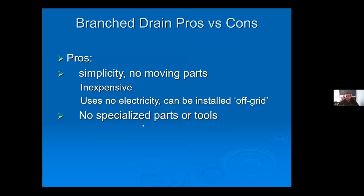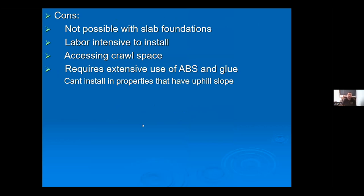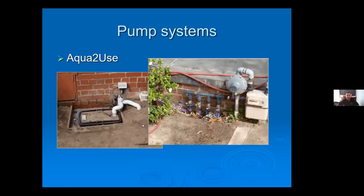Branch drain system pros: very simple, inexpensive, no electricity, off-grid, and no specialized parts — almost everything can be purchased at a hardware store or irrigation supply store. Cons: not possible with slab foundations, very labor-intensive due to heavy trenching, and a lot of trial and error getting the grade and double-L splitters just right. For a homeowner doing a weekend project where labor isn't the primary cost, that may not be a major downside.